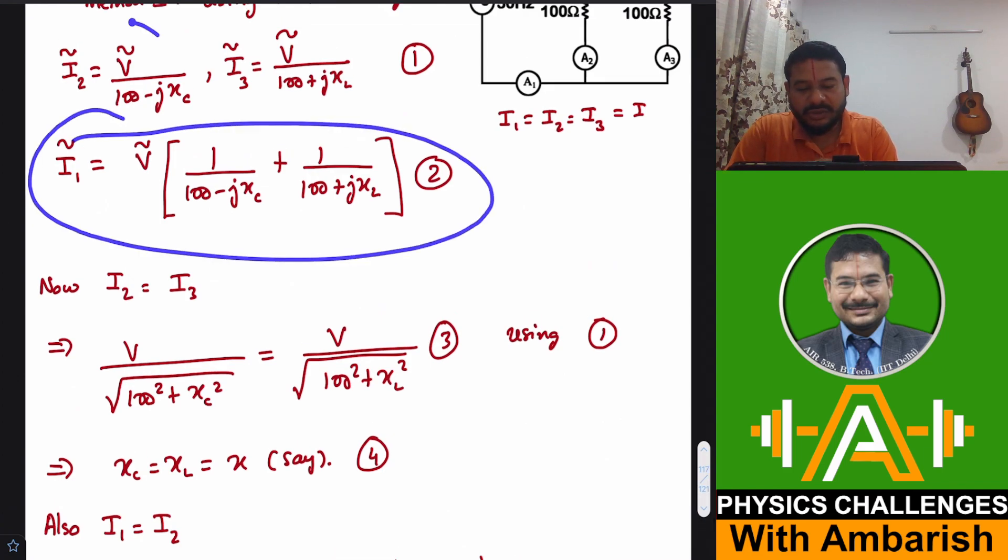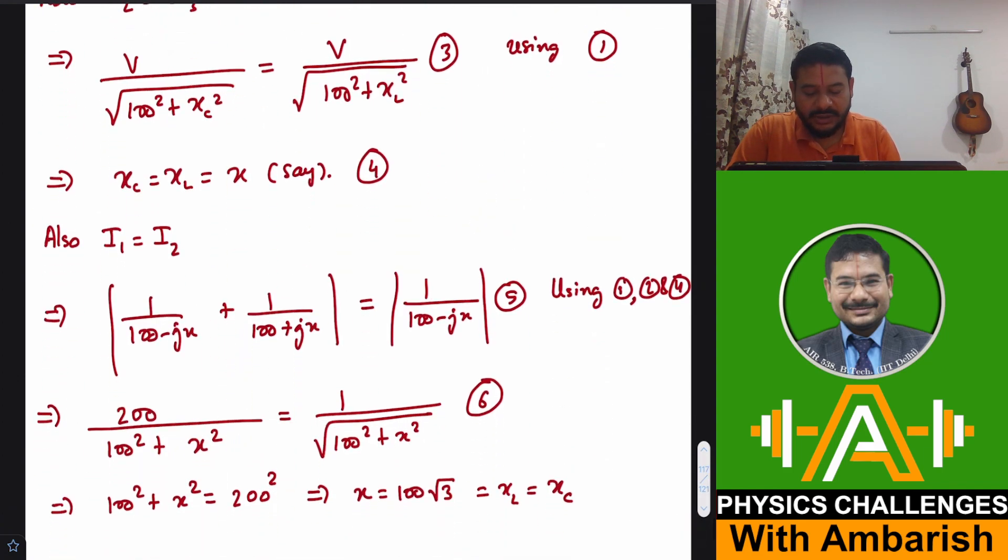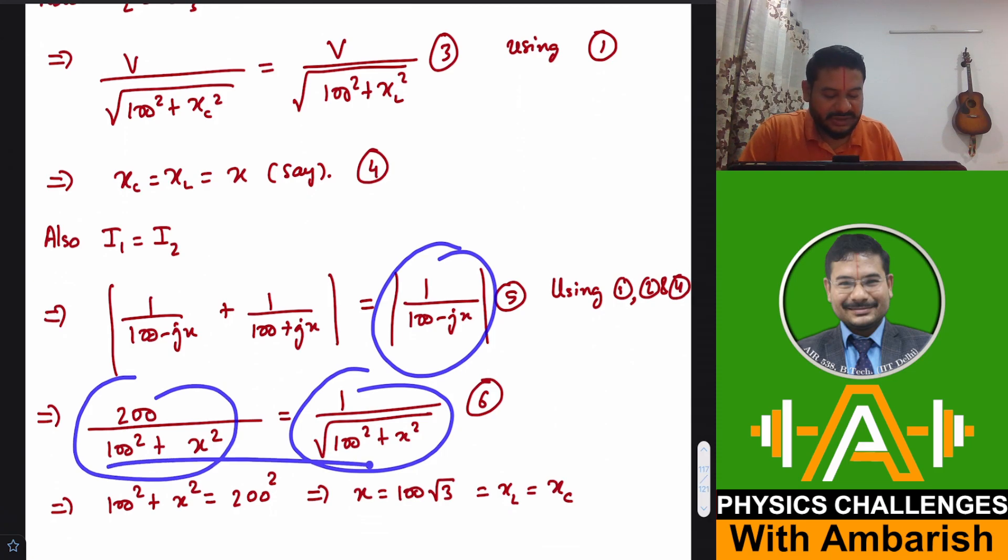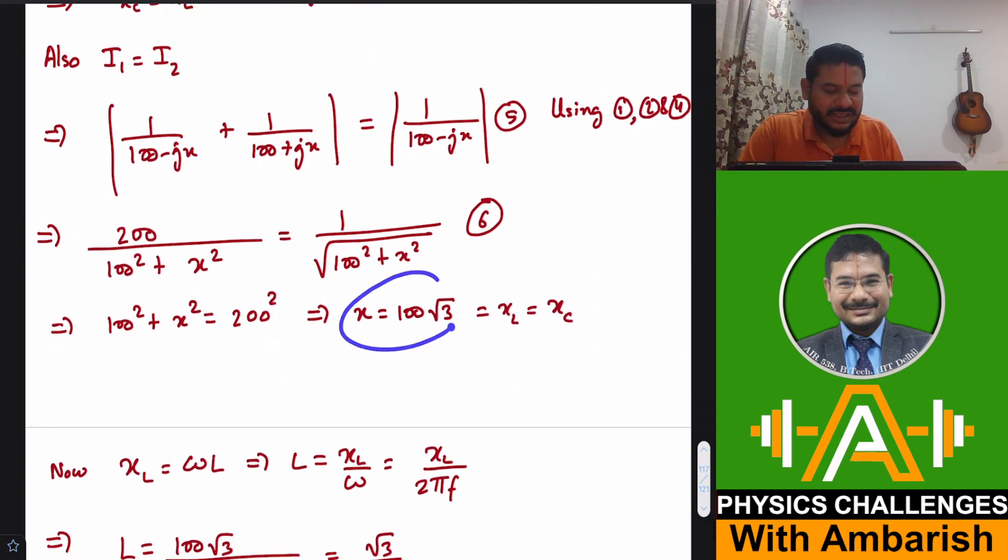Then I also know that I1 is equal to I2 magnitude wise. And how do I find the magnitude? So you can just take the LCM. So denominator simply becomes 100 square plus X square, and then 100 plus J X plus 100 minus J X becomes 200. So left side magnitude is simply 200 upon 100 square plus X square, which happens to be a real number altogether. This is the complex part vanishes when you take the LCM and add. And this should be equal to magnitude of this. That's the magnitude of current through the capacitor branch. So these two are equal and solving this, I get X as 100 root 3. Just simple equation, you rearrange and solve.